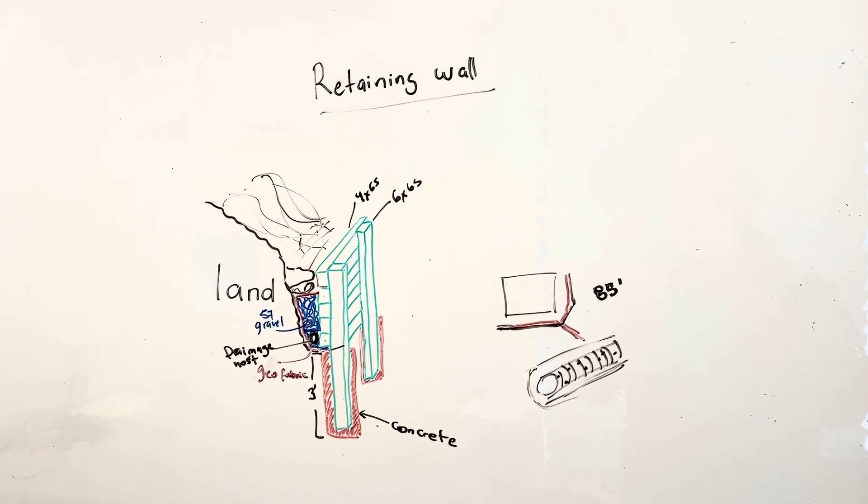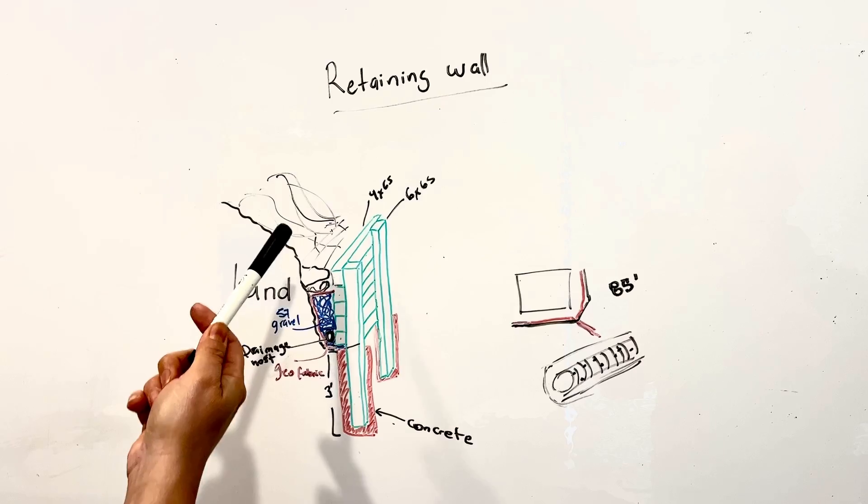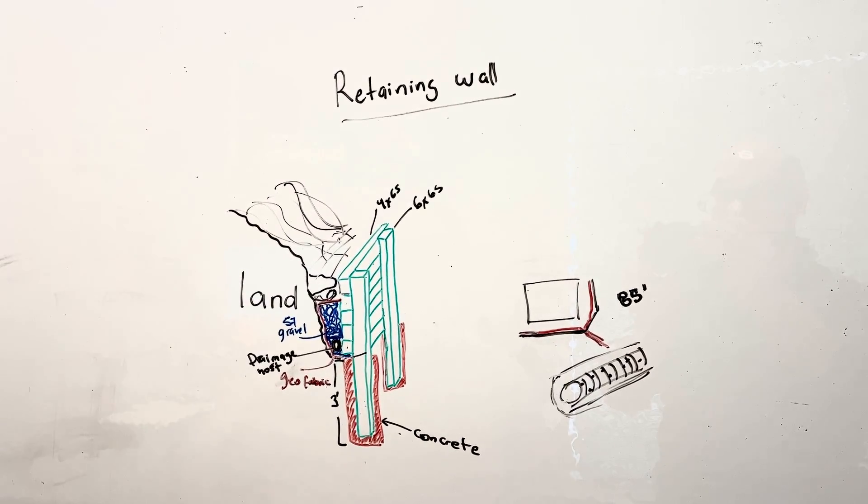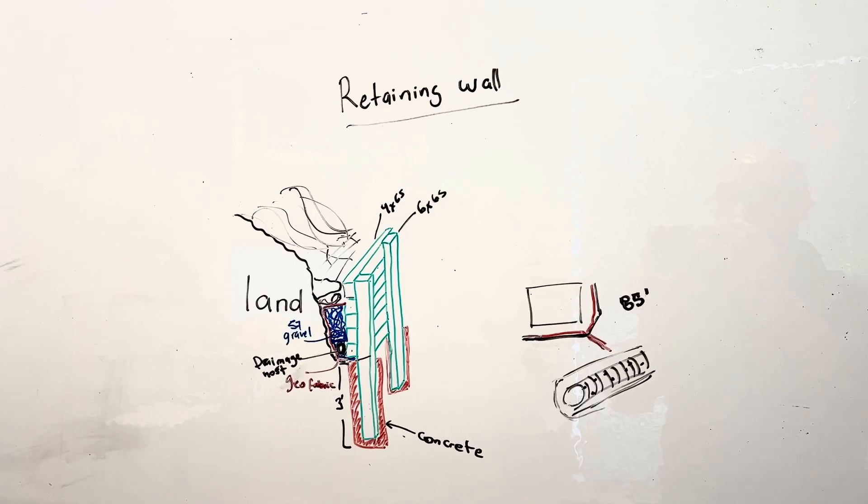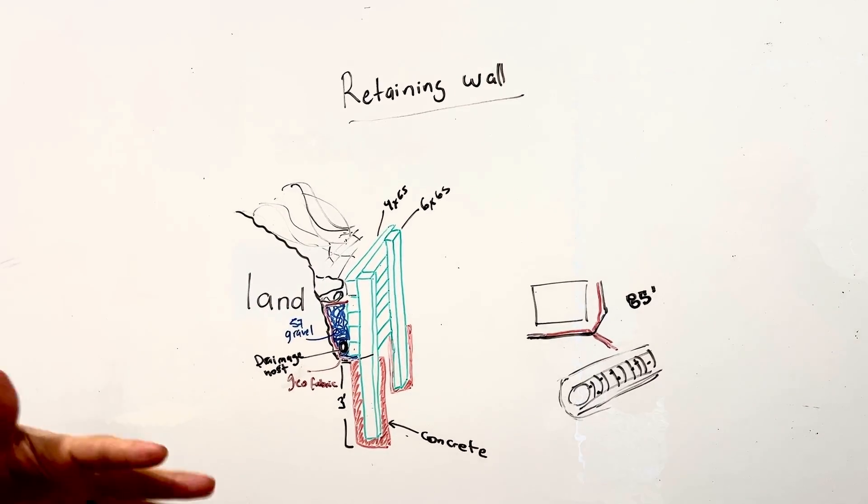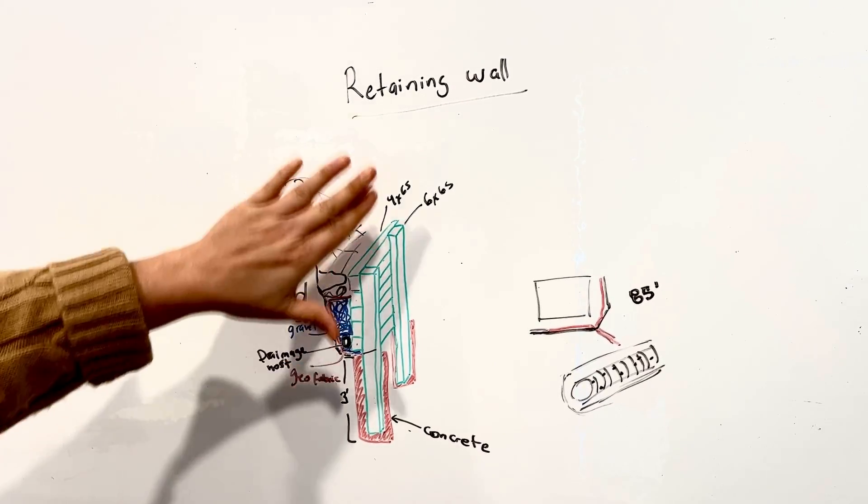Okay so this is the plan for your retaining wall. Your land is very sloped and it has a bunch of old lumber which we want to remove as much as possible because all lumber as it rots, it collapses. So we want to, without digging too deep, clean up all that.